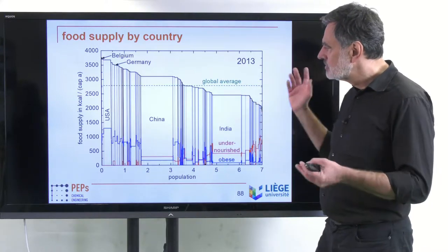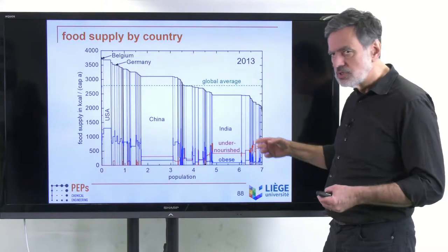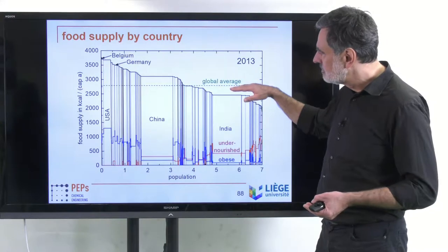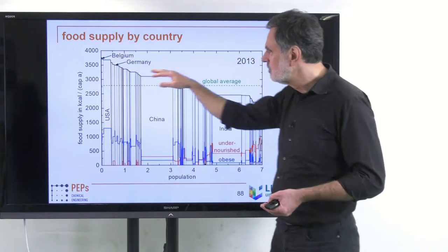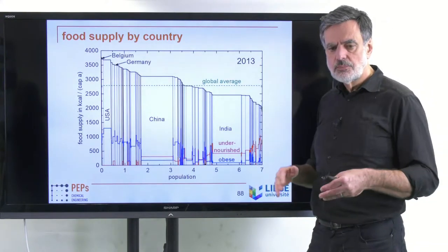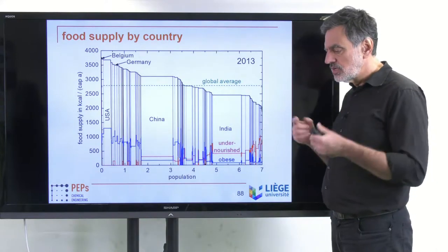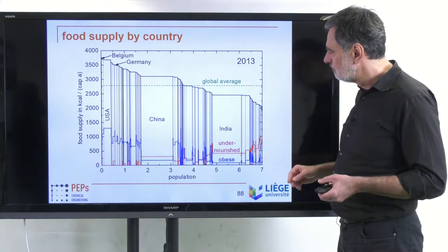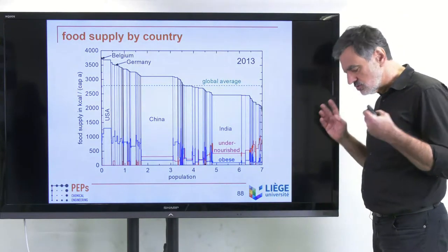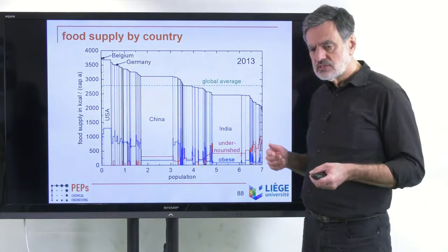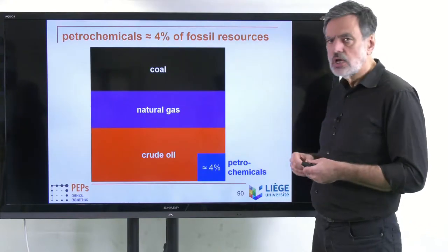The global average is around 2,800 kilocalories per capita per day. To avoid undernourishment and feed everybody properly, we need to shift values up, while decreasing the maximum to reduce obesity in high-supply countries. Accounting also for decreased food waste and better global distribution, around 3,000 kilocalories per capita per day is a good estimate for complete nourishment for everybody. That addresses the foodstuff side. On the other side, we also need to discuss bioenergy and biomaterials.